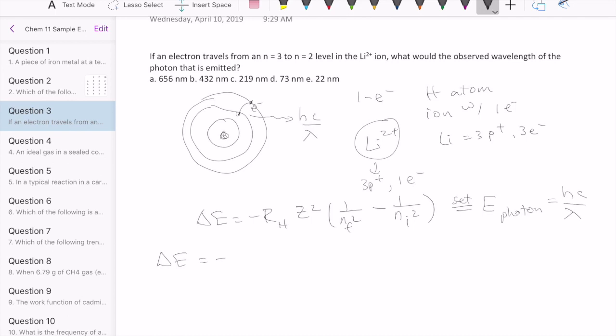Our delta E in this case would be negative RH, which is just this value, and then z squared. Our z for lithium is three, as we said earlier, so it's going to be three squared. Then one over the final orbit we were told is two. The initial orbit is three. All that calculation would give us negative 2.723 times 10 to the minus 18 joules. So that's the energy released by the electron.